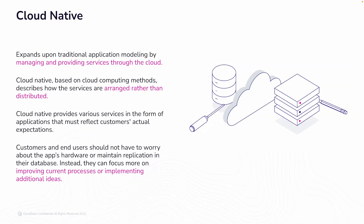Let's jump into cloud native. Being cloud native expands upon traditional application modeling by managing and providing services through the cloud. This is both quick and practical. Its operating resources offer a fully managed service model, which is at the core of application sustainability. Cloud native, based on cloud computing methods, describes how services are arranged rather than distributed. It provides various services in the form of applications that must reflect customers' actual expectations. When building a cloud native app, its structure is essential. Customers and end users should not have to worry about the app's hardware or maintain replication in their database — instead, they can focus on improving current processes or implementing additional ideas.